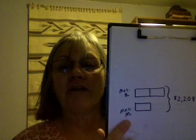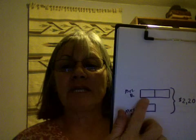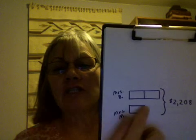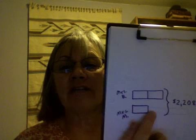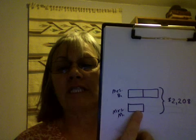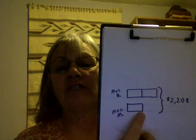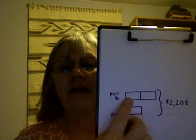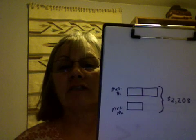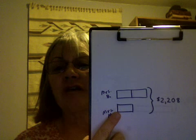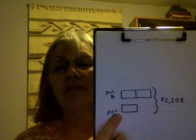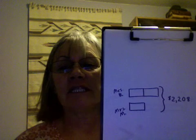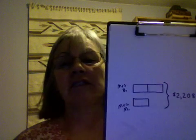For this example, we know that Mrs. M's amount plus Mrs. B's amount altogether is $2,208. To figure out each little section, we'll need to divide the $2,208 into some equal parts. It's probably easy for you to see that when we count each bar, we have one, two, three bars that are all the same amount. So to solve this problem, you would divide $2,208 first into three parts, give two of those parts to Mrs. B, and then give one part to Mrs. M, and you'll know the amount that each person in the story has.